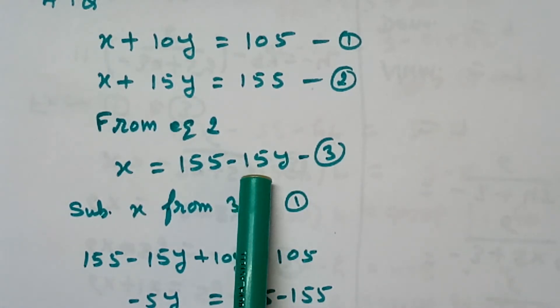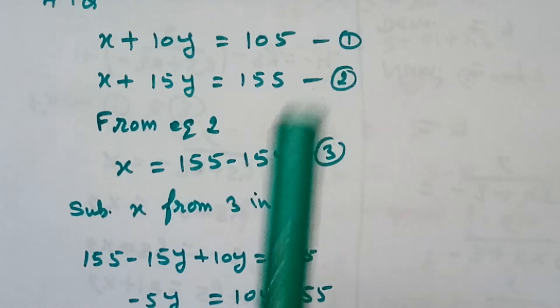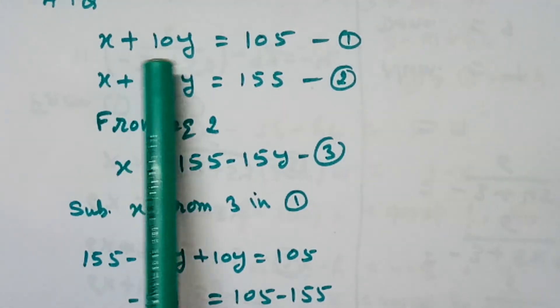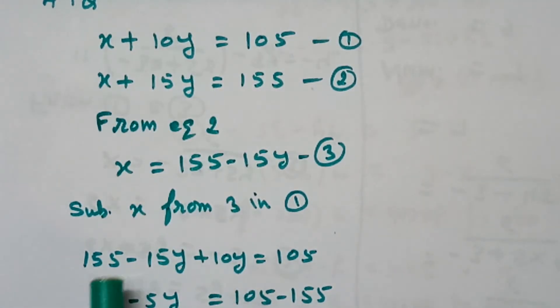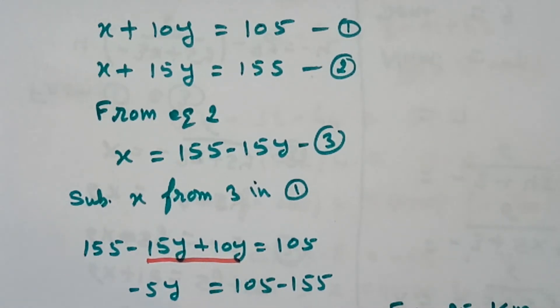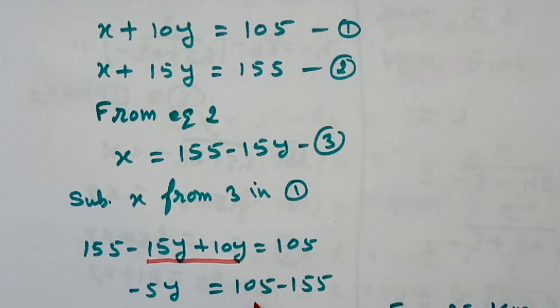Now, we will substitute the value of x from equation 3 in equation 1. Equation 1 is x plus 10y equals to 105. x is 155 minus 15y plus 10y equals to 105. These 15y and 10y, they subtract each other. It left here 5y and here 105 minus 155.